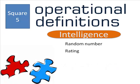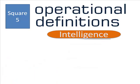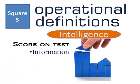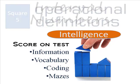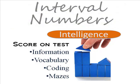If we defined intelligence as how fast you can solve a puzzle, our numbers would be on a ratio scale. But we chose to give people a test which samples their vocabulary, their general knowledge, their eye-hand coordination, and several other areas. With this test as our operational definition of intelligence, zero doesn't mean total lack of intelligence. So we are using interval numbers.